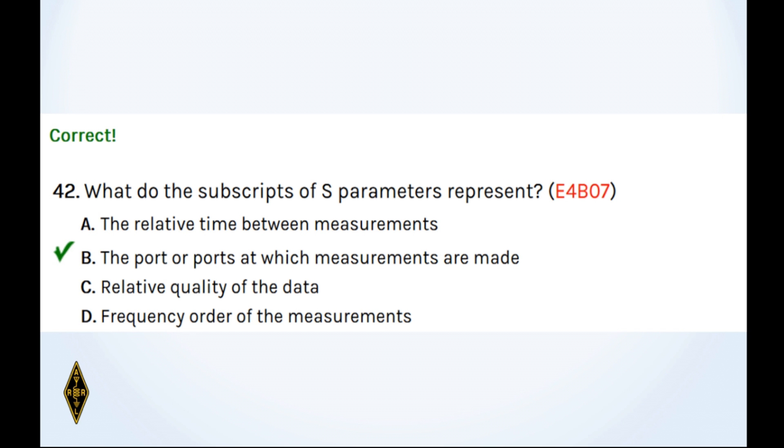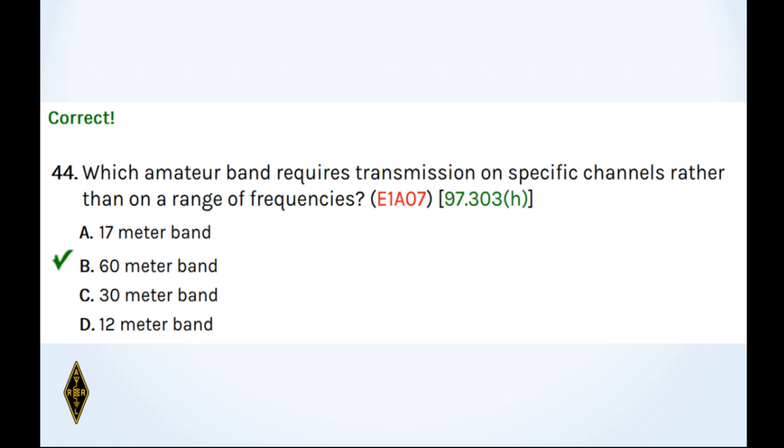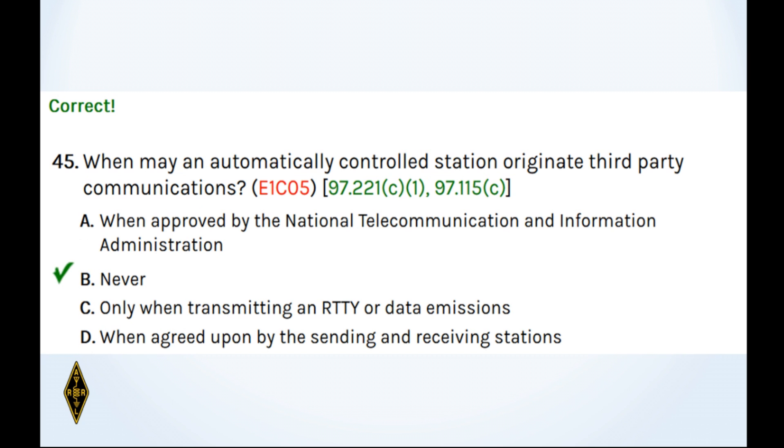And 43, what digital protocol is used by APRS? Well, APRS uses packet radio, and packet radio uses the amateur X.25 protocol, or AX.25. And 44, which amateur band requires transmission on specific channels? That's the 60-meter band, 5 megahertz. That's 60 meters. And when may an automatically controlled station originate third-party communications? Never.